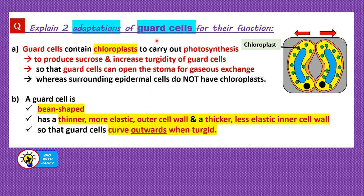Consider this question: explain two adaptations of guard cells for their function. Guard cells contain chloroplasts — the green structures — to carry out photosynthesis, so they can produce sucrose. Sucrose increases the osmotic pressure in the guard cells and increases the turgidity of the guard cells when water diffuses in by osmosis. The surrounding epidermal cells do not have chloroplasts; only the guard cells do, as they are specialized epidermal cells.